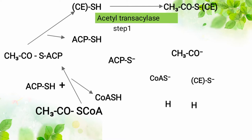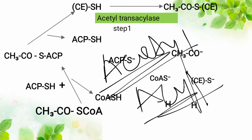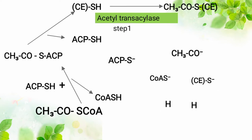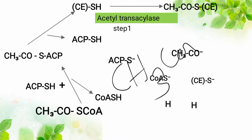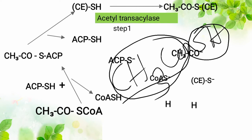Before we go into that, I want to explain something: acetyl and acyl — what they actually mean. Acetyl is a two-carbon unit fatty acid that has its hydrogen and its OH removed. So if you have a two-carbon unit CH₃COOH, when you remove the OH, what remains is acetyl. The two-carbon fatty acid with its OH removed is acetyl.